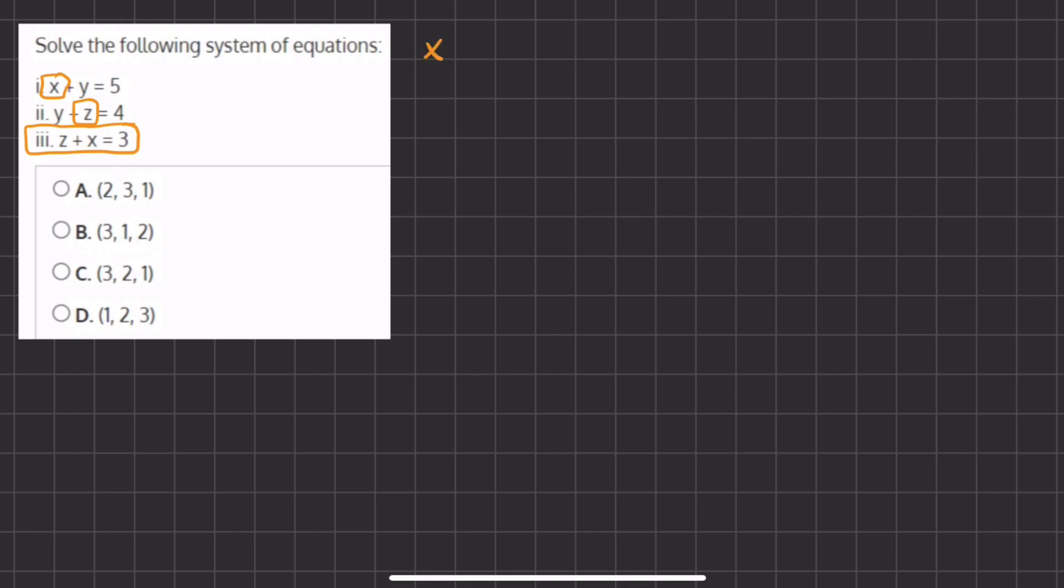So in our first one we are going to isolate the x so we have x equals 5 minus y, and in our second expression when we have to isolate the z we have z equals 4 minus y.